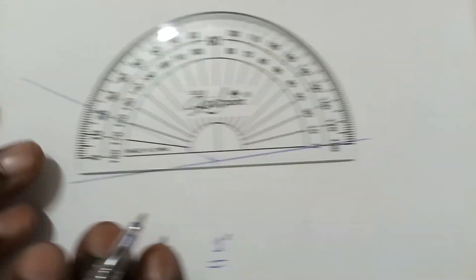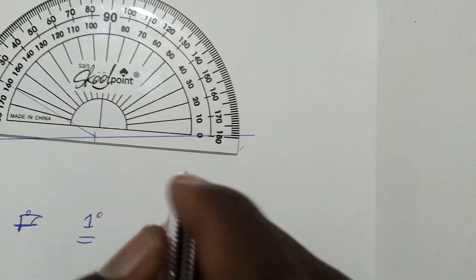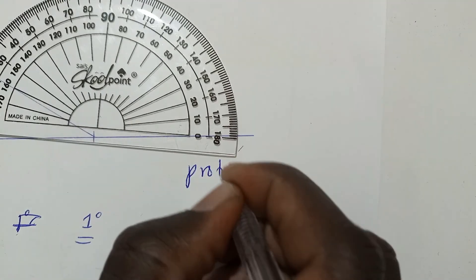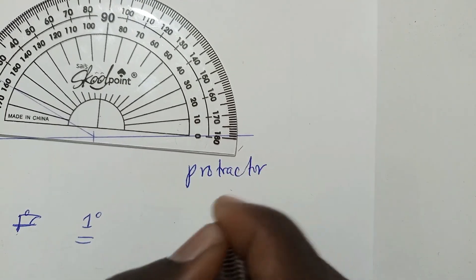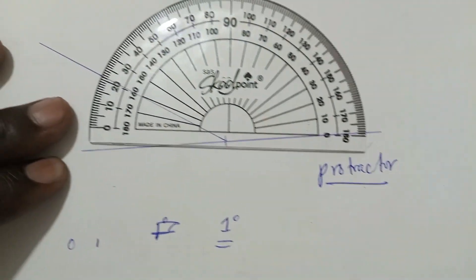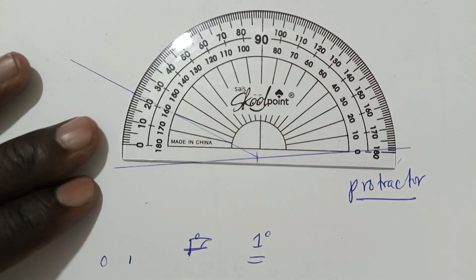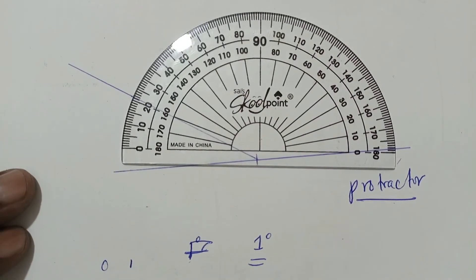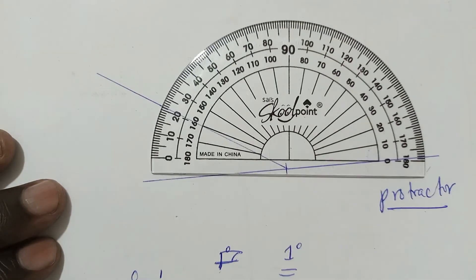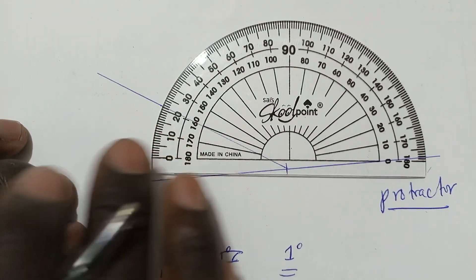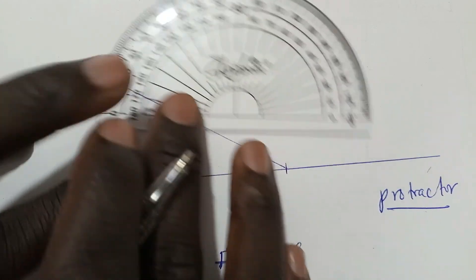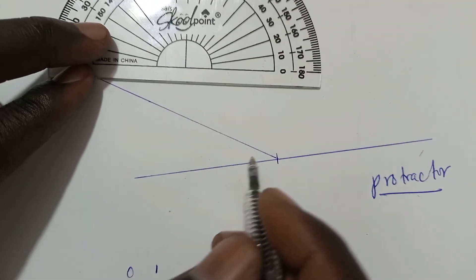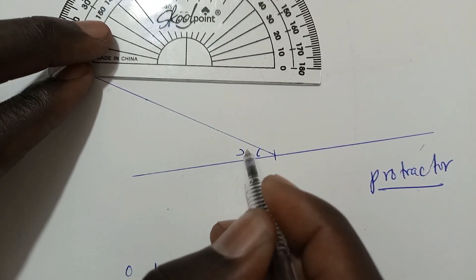This instrument is called a protractor, used to measure the angles between lines and between surfaces. Let's say we want to measure this angle — I'll call it angle X.